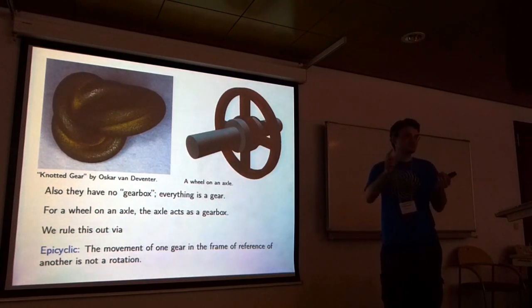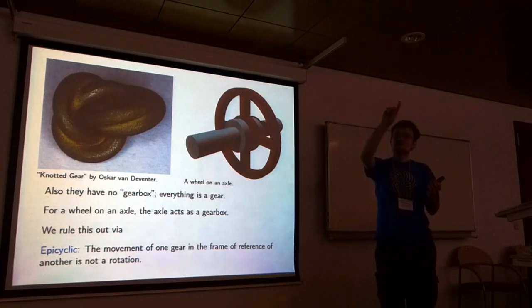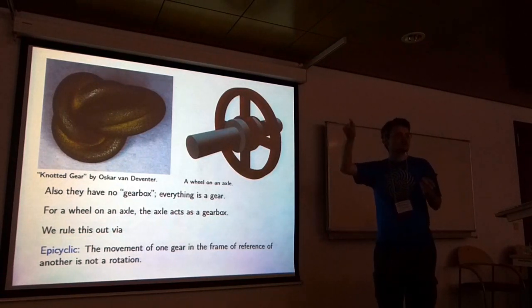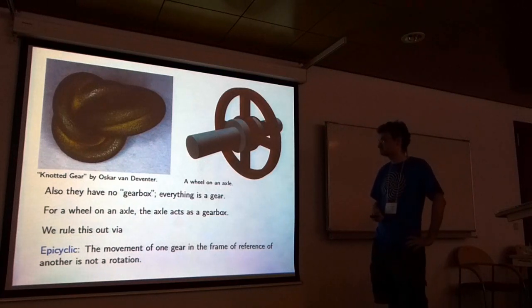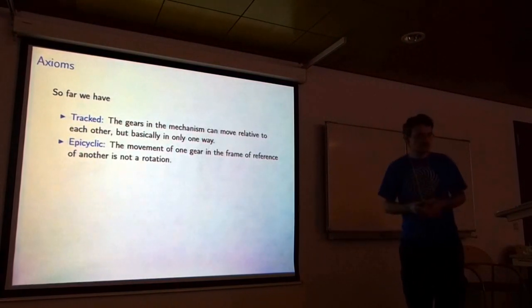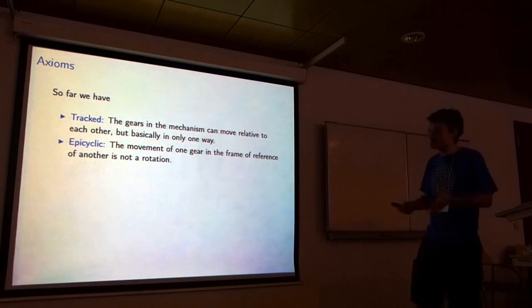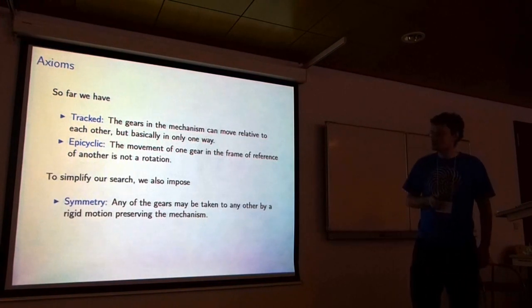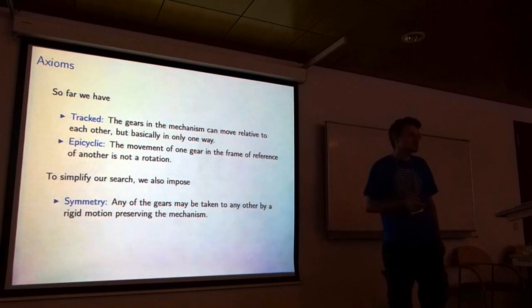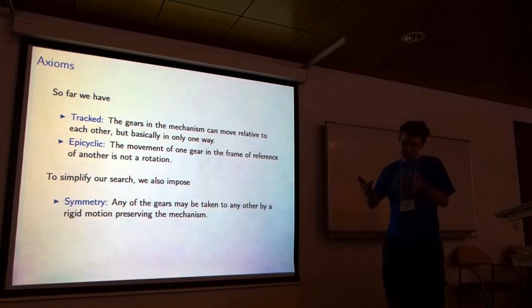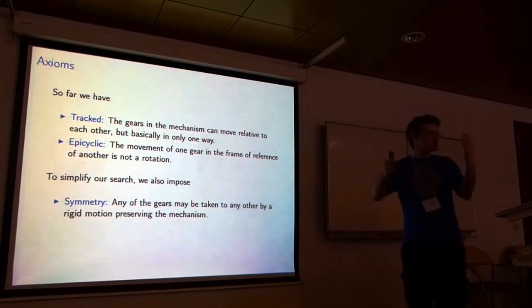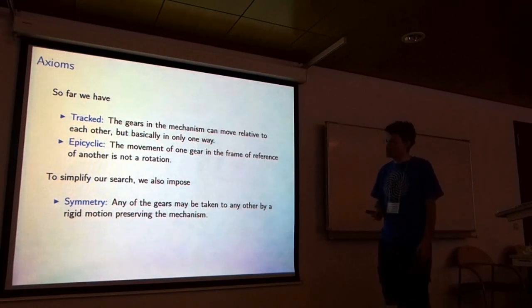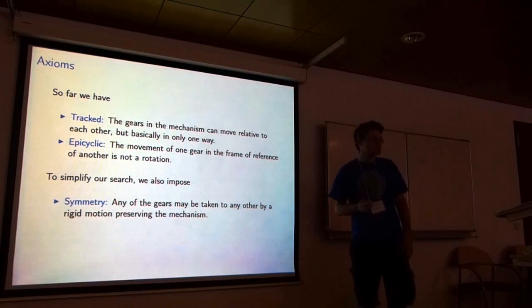Why is it called epicyclic? This is in reference to the Greek theory of the movement of the planets. They have the planets moving along circles, but then they have circles within those circles. So this is a more complicated motion made up of a combined circular rotation. These are the things that we want our mechanism to satisfy: to be tracked, to be epicyclic. We also added one extra axiom symmetry, which says that we want the gears to all look the same. We want the entire mechanism to have a symmetry, so I can just rotate the whole mechanism and the gears move to each other.